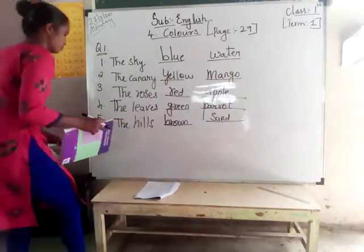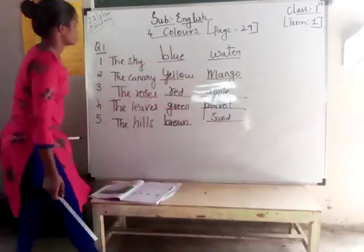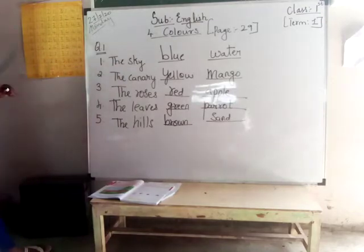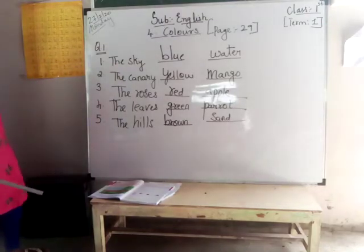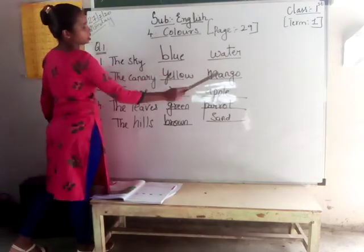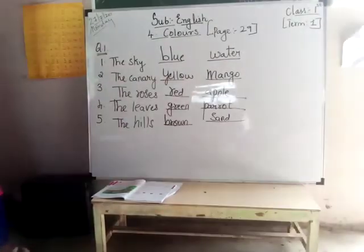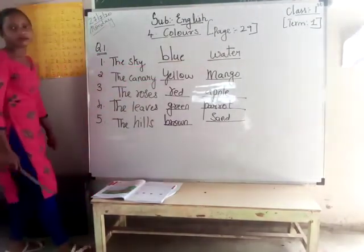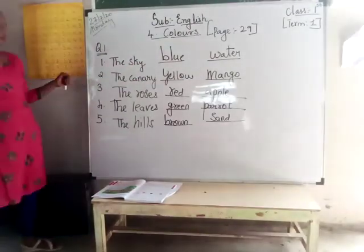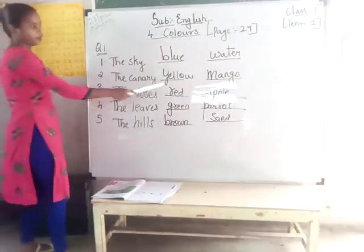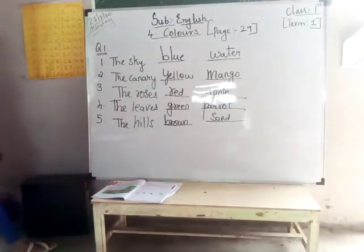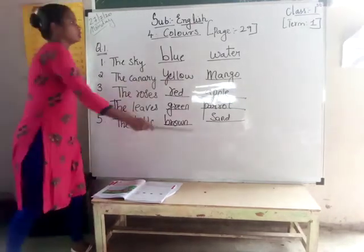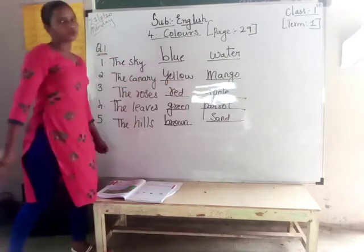Okay, let me talk now. The sky — blue: B-L-U-E. Blue. And then water: W-A-T-E-R. Water. The sky, blue; water, done. Now we will go for the second one — the canary: Y-E-L-L-O-W. Mango: M-A-N-G-O. Mango.